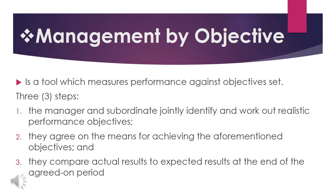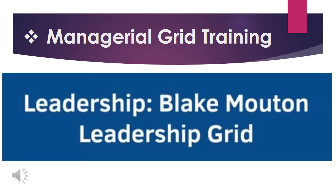The first man management tool is Management by Objective. It is a tool which measures performance against objectives set. Management by Objectives is a strategic management model that aims to improve the performance of an organization by clearly defining objectives agreed to by both management and employees. There are three steps: first, the manager and subordinate jointly identify and work out realistic performance objectives; second, they agree on the means for achieving those objectives; and third, they compare actual results to expected results at the end of the agreed period.